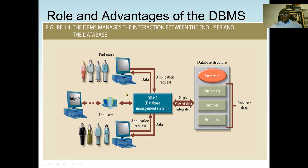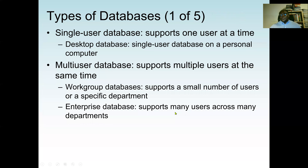End users are those who sit at the computer using the database to perform their work. We have end users making data and application requests, the database management system where data is stored, and the physical database. The database structure normally consists of metadata, customers, invoices, and products. The database manages the interaction between the end users and the database, with different end users doing different work accessing one system.